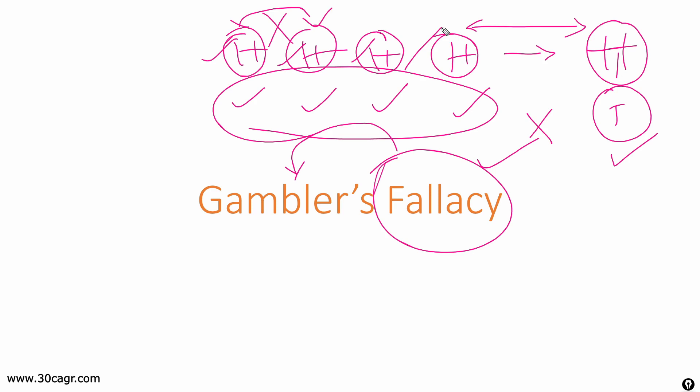There is no reason for us to believe that because there are series of events giving same output, in this case same heads for five times or ten times, we cannot think that the next output would be any different. I know this is a little difficult to digest, but this is what this gambler's fallacy is.